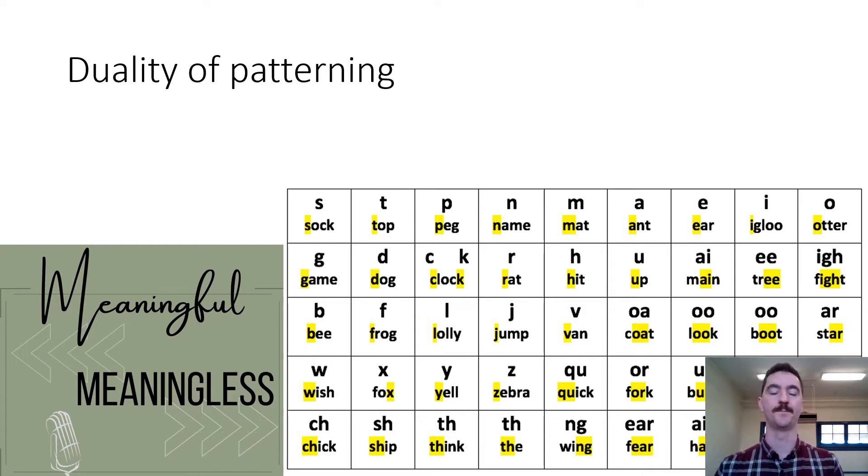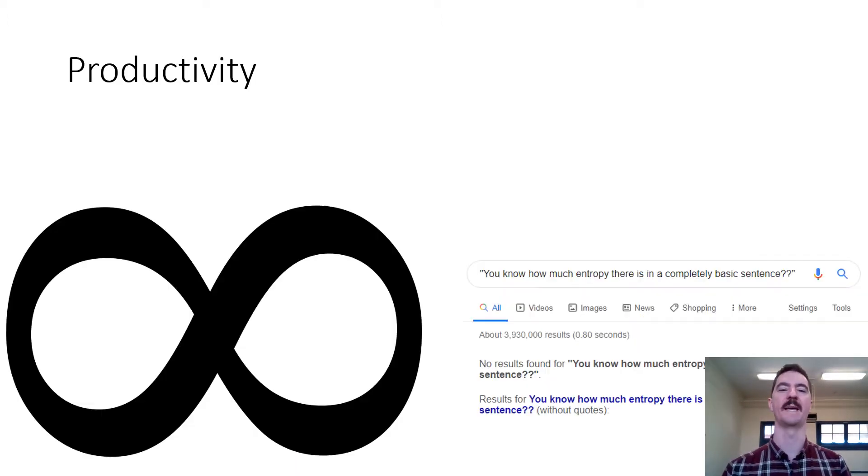Duality of patterning basically means that there's the sounds and then there's the language. The G, A, M, E sounds are four pretty meaningless sounds by themselves, but when you put them together to say game, you've got something meaningful. If you think of listening to someone who speaks a language that you don't understand, you can hear the sound but you can't make out the meaning.